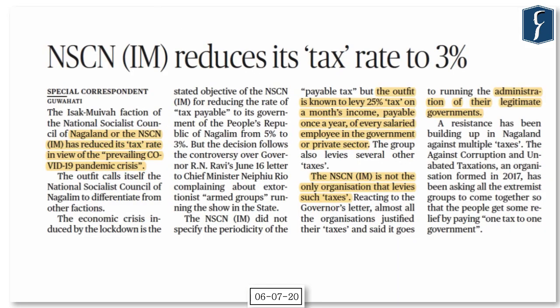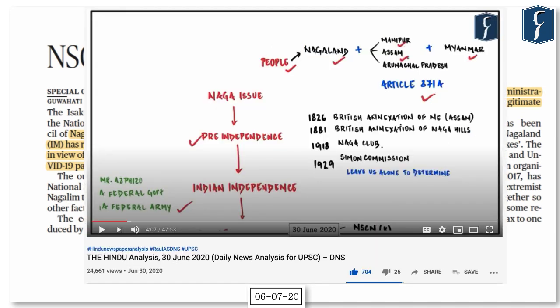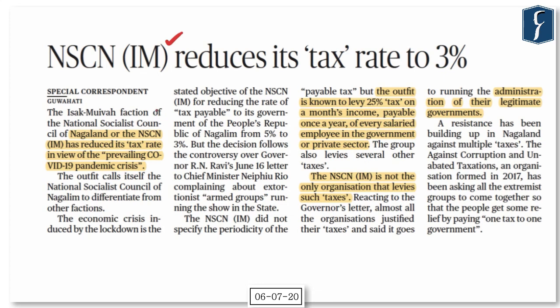The first news from the prelims pointers perspective appears on page number 9: 'NSCN-IM Reduces Its Tax Rate to 3%.' This is exactly the topic discussed in DNS dated 30th June 2020. Let us quickly revise what was discussed that day so that this particular news makes more sense.